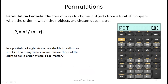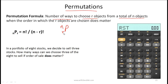Finally, permutations give the number of ways to choose r objects from n objects where the order does matter. This is written as nPr and equals n! / (n - r)!.